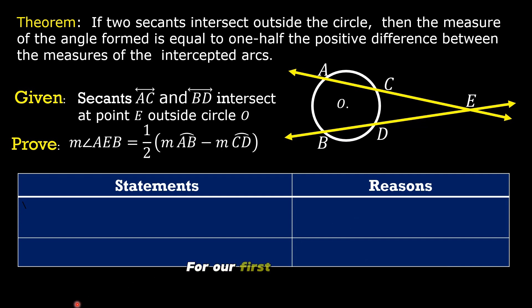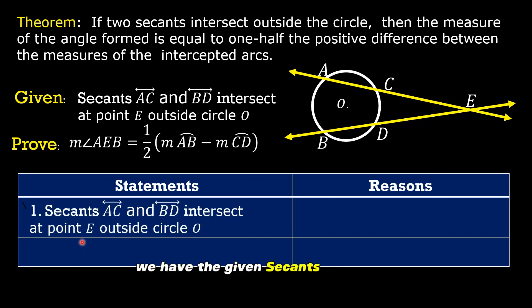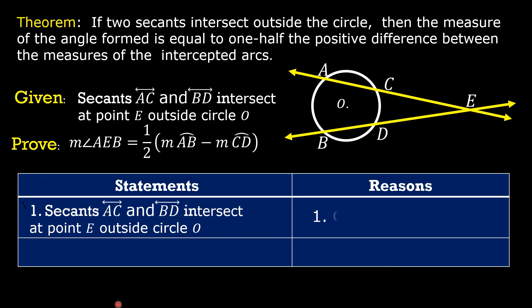For our first statement, we have the given: secants AC and BD intersect at point E outside circle O. The reason is: given.